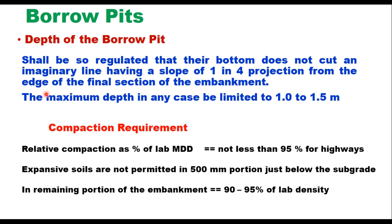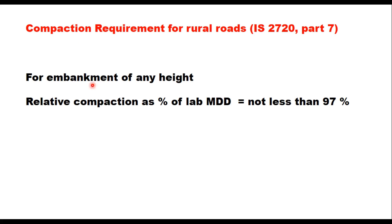Compaction requirements: in the case of highways, lab density should be estimated through heavy compaction, and relative compaction in the field as a percentage of lab MDD should not be less than 95%. Expansive soils are not permitted in the 500 mm portion just below the subgrade, but in the remaining portion of the embankment, for expansive soils the density can be up to 90 to 95% of lab density. In the case of rural roads, density is estimated through light compaction as per IS 2720 Part 7, and for embankment of any height, relative compaction should not be less than 97% of the lab maximum dry density.